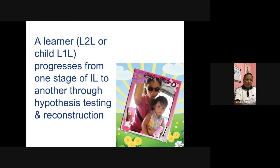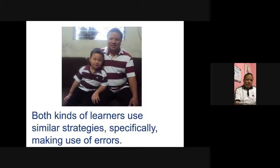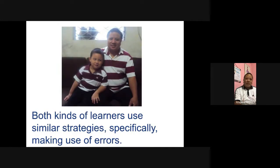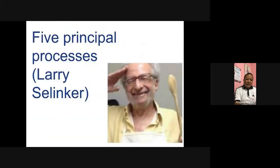Both kinds of learners — children learning the first language and adult learners of a second language — use similar strategies, specifically making use of errors. The errors will help them reconstruct their hypothesis about the language. According to Larry Selinker, there are five principal processes of interlanguage.